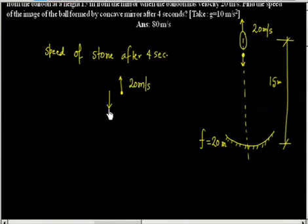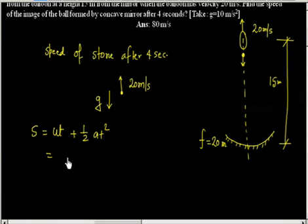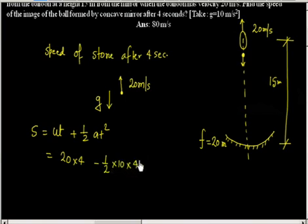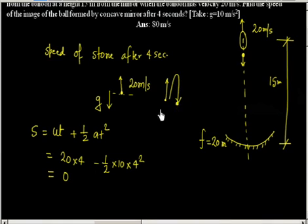There is deceleration due to gravity, so we use s = ut + ½at². With u = 20 m/s upward, t = 4 seconds, and acceleration downward (negative), we get s = 0. This means after 4 seconds, the ball is back at the same point — it was thrown up but returns to the same height.